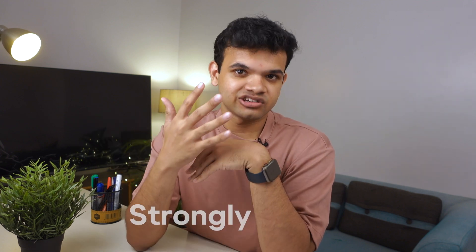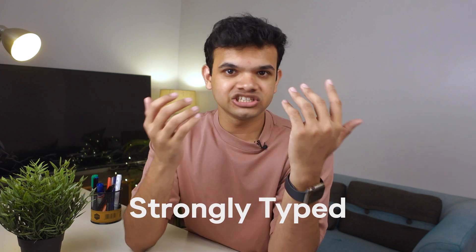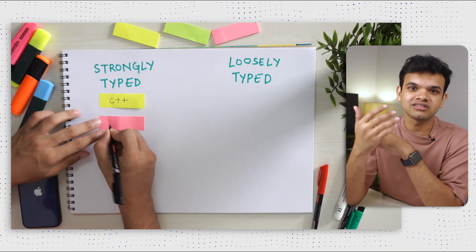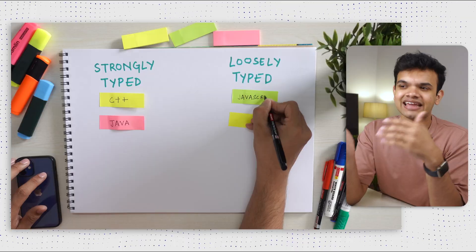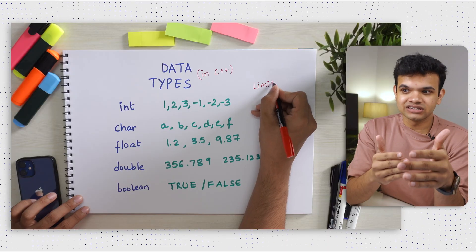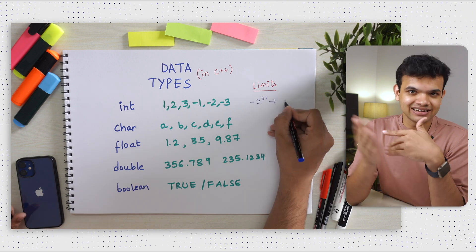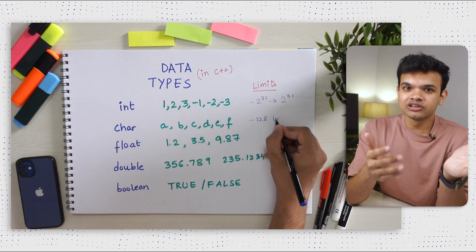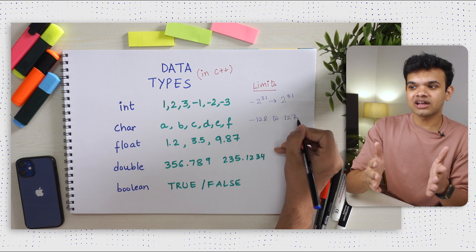A lot of programming languages force you to mention a data type while making an integer — these are known as strongly typed languages. Languages like C++ and Java are strongly typed. Some languages don't need you to define a type — these are known as loosely typed languages, like JavaScript, Perl, and PHP. All these data types have limits, that is the amount of data they can store. For example, integer has a limit of 2 to the power 31. And since computers can only store numbers, characters are stored as numbers, and the table used to map from a character to a number is known as an ASCII table.